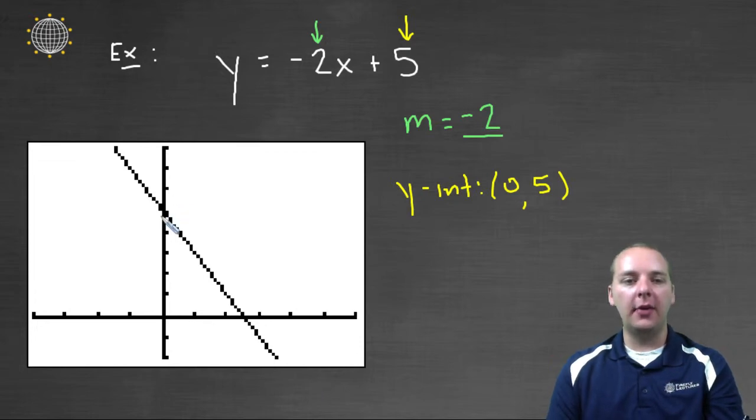Look over here at the graph. Where does it cross the y-axis? Well sure enough it crosses at 5. And also look at this. From the y-intercept you can go down 2 over 1, and you're at another point on the line.